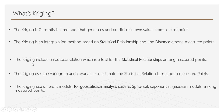The Kriging method includes autocorrelation, which is a tool for analyzing the statistical relationship among measured points. For this reason, Kriging uses the variogram and covariance to estimate the statistical relationship among the measured points.